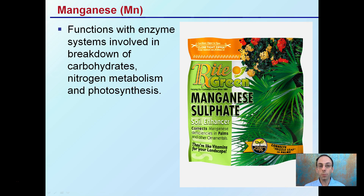Manganese — not to be confused with magnesium — is represented by Mn. It functions with enzyme systems involved in the breakdown of carbohydrates, nitrogen metabolism, and photosynthesis. Here's a fertilizer that corrects frizzle leaf in palms, so it's commonly found as a palm tree fertilizer, but manganese is needed by all plants.